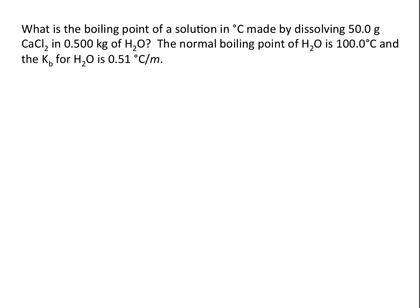What is the boiling point of a solution in degrees Celsius made by dissolving 50 grams of calcium chloride in 0.5 kilograms of H₂O? The normal boiling point of H₂O is 100°C, and the boiling point constant for H₂O is 0.51°C per molal. To calculate delta T, we need the molal boiling point elevation constant — given in the problem — and the molality of the solute particles in the solution.